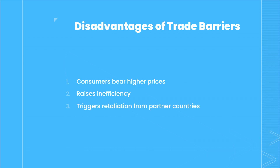Lastly and most notably, trade barriers are likely to trigger retaliation from partner countries. Partner countries have an interest in their industry because it provides employment and income. Tariffs suppress their industrial performance, prompting them to retaliate. Such a situation might lead to a trade war, which can severely harm one or both nations' economies.